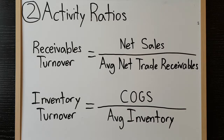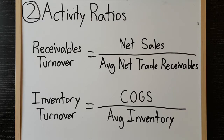Receivables turnover expresses how many times a company collects its average receivables balance in a year. This measures how efficient a company is at extending credit and collecting on debts. Inventory turnover, on the other hand, expresses how many times a company sells and replaces its average inventory balance in a year. This measures how efficiently a company manages its inventory.